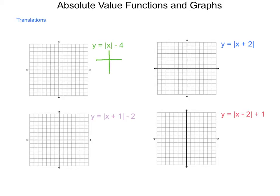We'll do a small table again with x and y for values negative 3 through 3. Substituting negative 3 into the absolute value of x minus 4: the absolute value of negative 3 is 3, minus 4 gives negative 1. Negative 2 gives negative 2, negative 1 gives negative 3, 0 gives negative 4, 1 gives negative 3, 2 gives negative 2, and 3 gives negative 1. The table has been built.